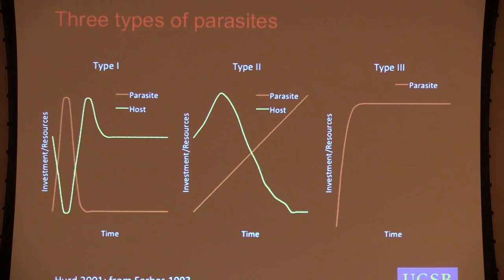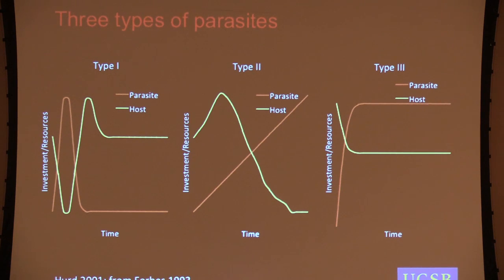We might also have a parasite where you're always infected and always have costs, and there's not much you can do about that — you can't shift much around. So you might just see reductions throughout.